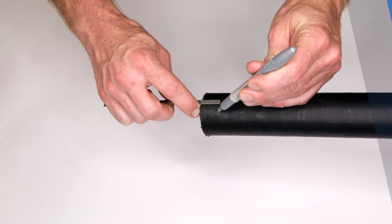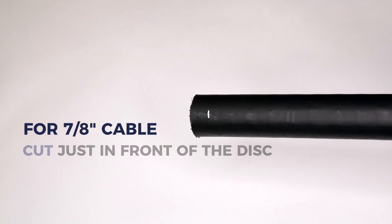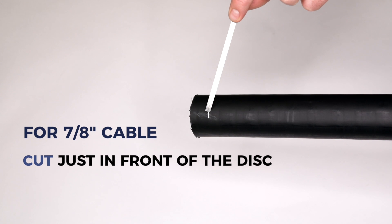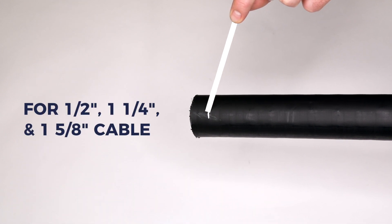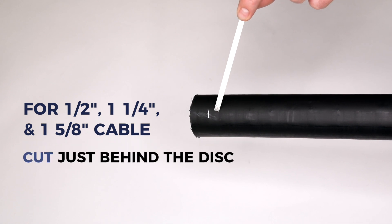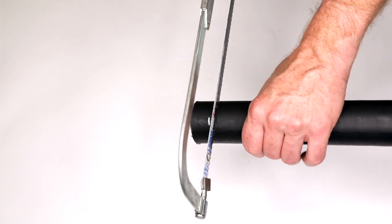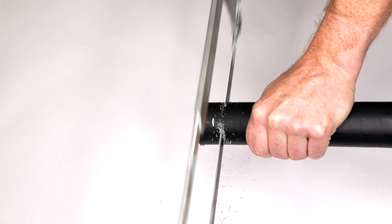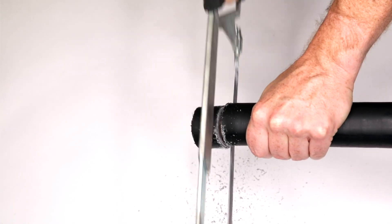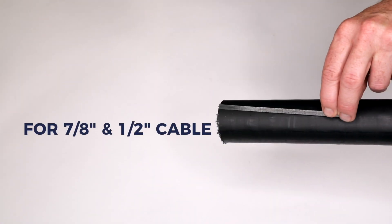For 7/8-inch cable, cut just in front of the disc. For half-inch, 1-1/4-inch, and 1-5/8-inch cables, cut just behind the disc. Cut the cable squarely using a hacksaw. Ensure that the cable is straight for at least 10 inches from the end for 7/8-inch and half-inch diameter cables.